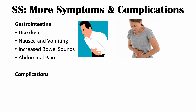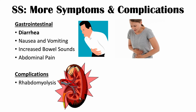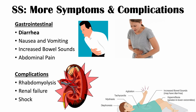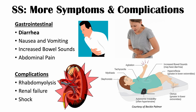Additional complications include rhabdomyolysis due to neuromuscular abnormalities, which is a breakdown of muscle. The muscles release myoglobin, which can damage the kidneys and lead to renal failure. Shock is another potential complication. Important clinical findings include diaphoresis, mydriasis, tachycardia, agitation, autonomic instability with hypertension, increased bowel sounds, hyperreflexia, and clonus — with neuromuscular abnormalities more often found in the lower extremities.